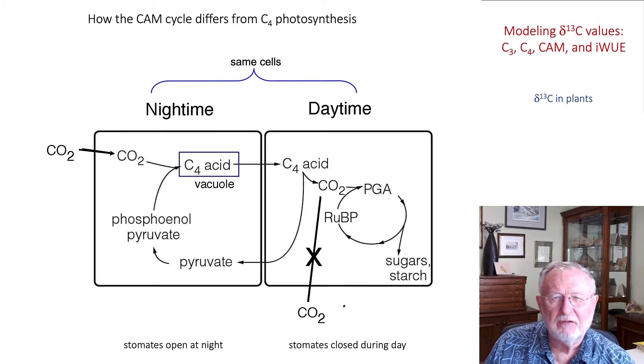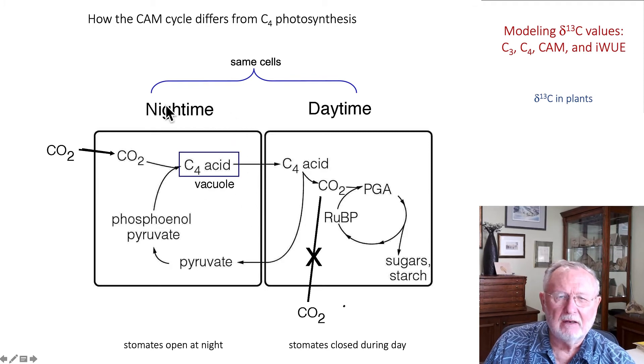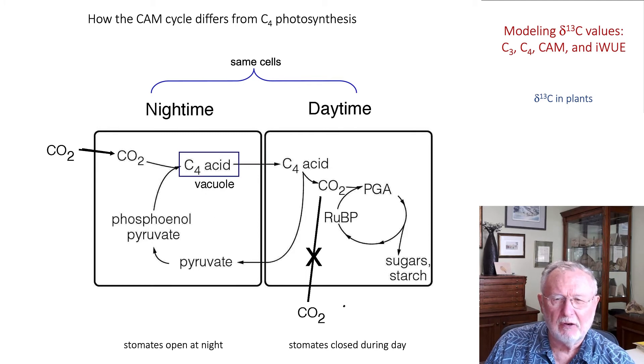Now CAM photosynthesis is very similar to C4 photosynthesis, whereas in C4 plants we have a spatial separation of the PEP carboxylase activity and the Rubisco activity into different cells. In CAM plants, those two reactions—those two carboxylations—take place in the same cell. In CAM plants, PEP carboxylase is active at night and the CO2 is fixed into a C4 acid, which is stored in the vacuole. During the day, the stomata are closed, that C4 acid is decarboxylated, and we have the C3 cycle as we had for C4.